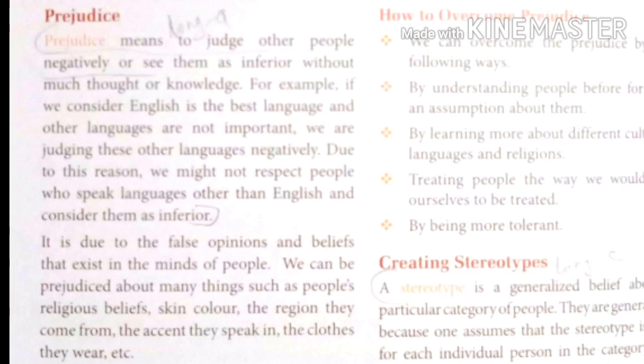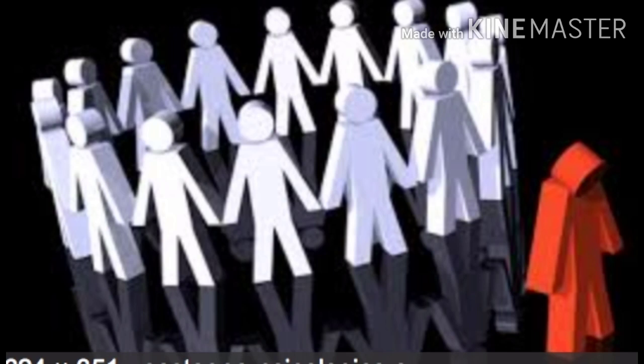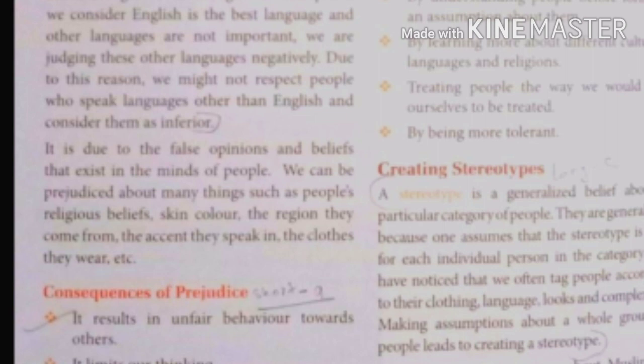Prejudice is due to false opinions and beliefs that exist in the mind of people. We can be prejudiced about many things — pakshpaat — and we can see different examples of it in our society. Just like religious beliefs, because our country is a secular country and different people are free to follow and choose their own religion. Also skin color, the region where they are living or where they come from, the accent they speak in, their language, the clothes they wear, etc.